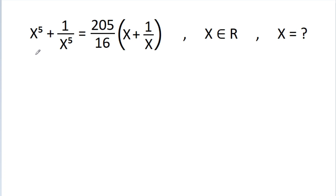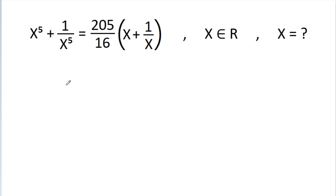In this video, we have given that x power 5 plus 1 by x power 5 is equal to 205 by 16 times x plus 1 by x, and x belongs to real numbers. Then we have to find the value of x.